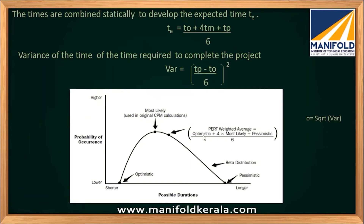In the beta distribution curve, the x-axis shows possible duration and the y-axis shows probability of occurrence. The chance of occurrence is very low for optimistic and pessimistic times, and highest for the most likely time. The variance formula is: variance = ((pessimistic time − optimistic time) / 6)², and the square root of variance gives the standard deviation.